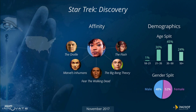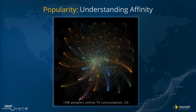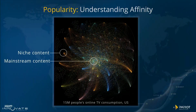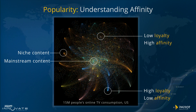Interestingly, the fans for Star Trek Discovery skew much older than those previous TV shows, and they're into shows like The Flash and Marvel's Inhumans. This is what 15 million people's online TV consumption in the US looks like over a single month. Every dot on this chart represents a TV show — the brighter the dot, the more people consume that show. Every line represents a propagation, meaning you watched one show and moved on to watch another one. The brighter the line, the more people did that propagation. This affinity chart allows us to understand niche content specifically designed for niche audiences versus mainstream content that resonates with a wider group, and the value of an individual program on the underlying catalog of content.